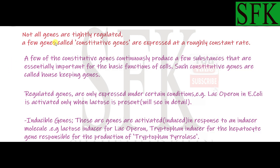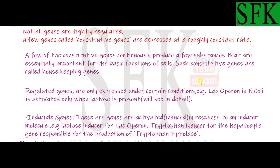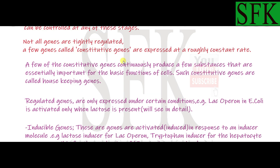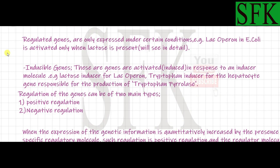A special category of constitutive genes continuously produces substances that are essentially important for the basic functioning of the cell itself. Such constitutive genes are called housekeeping genes — those genes that are continuously producing components essentially important for the basic functions of the cell. This is the definition of housekeeping genes, an important term you should know.